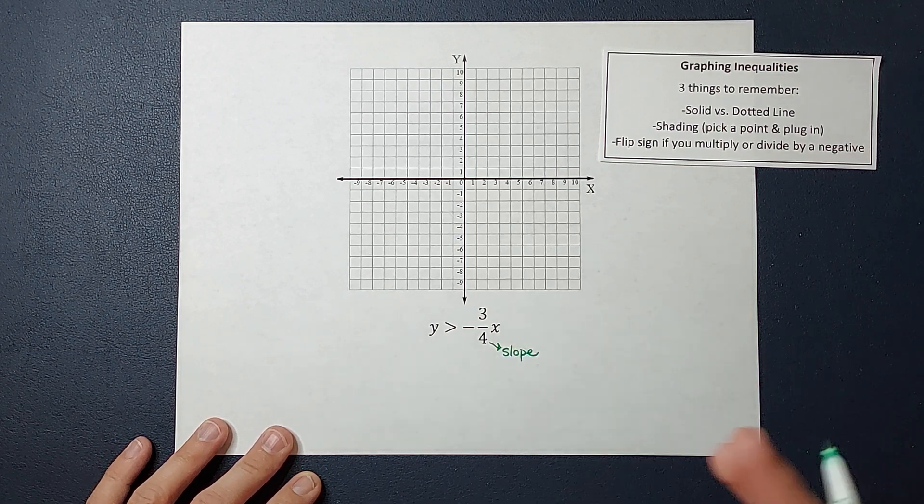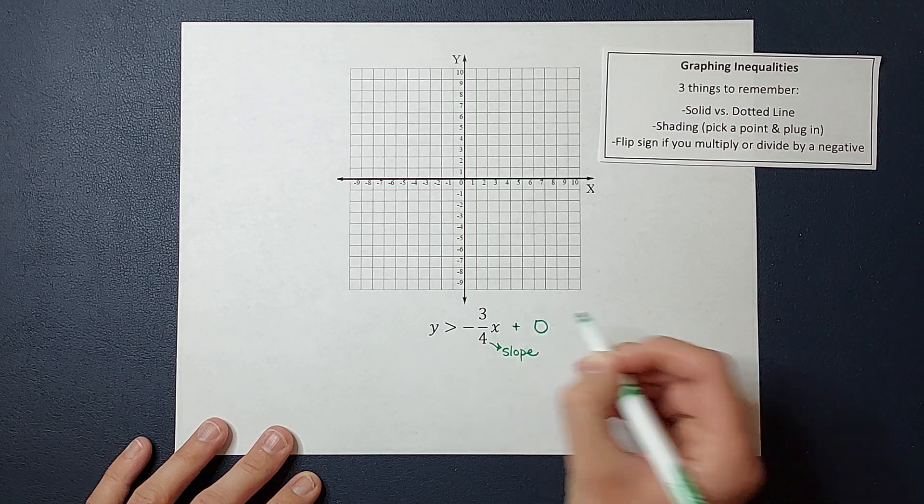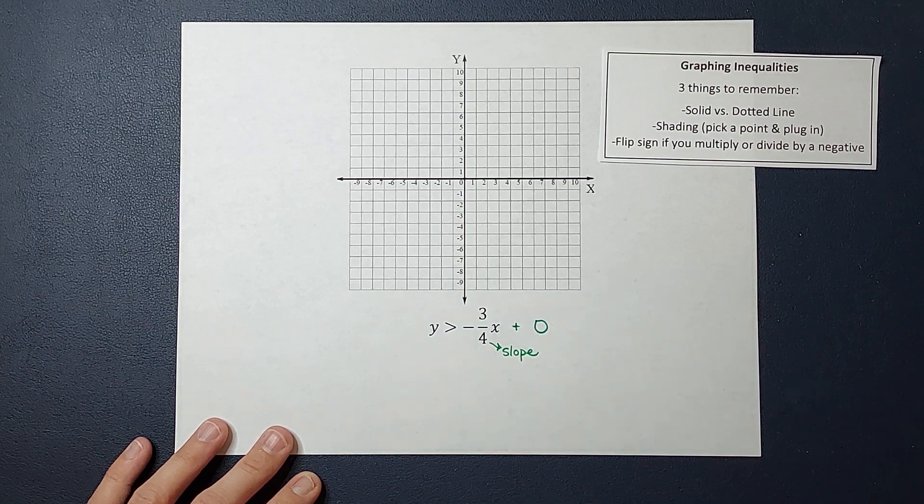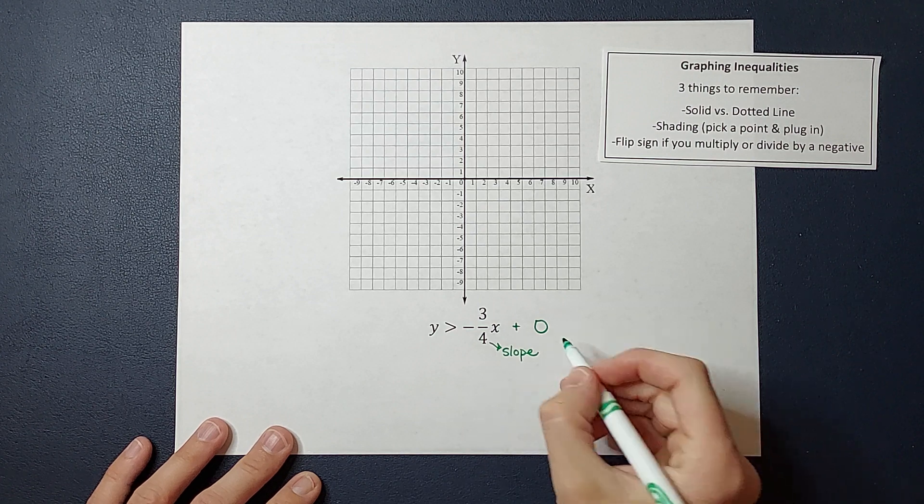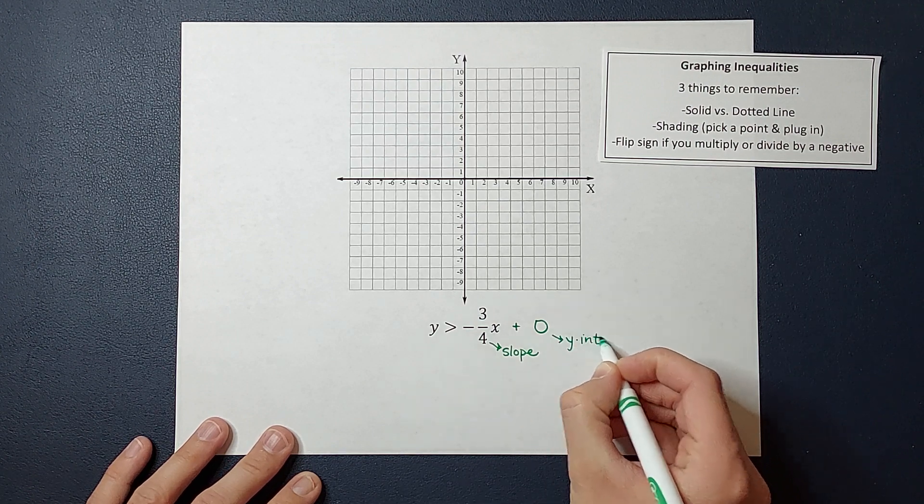And my Y intercept is whatever is being added or subtracted on the back. Now there's nothing here, but this could be plus zero. So when there's nothing there, it could be a plus zero. So that zero is my Y intercept.